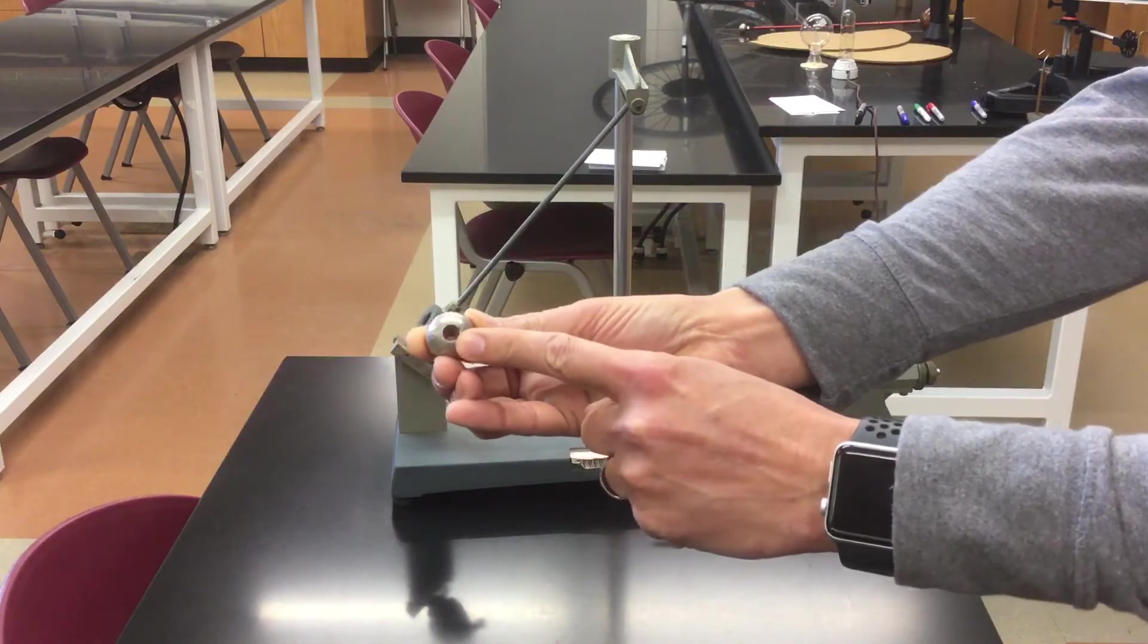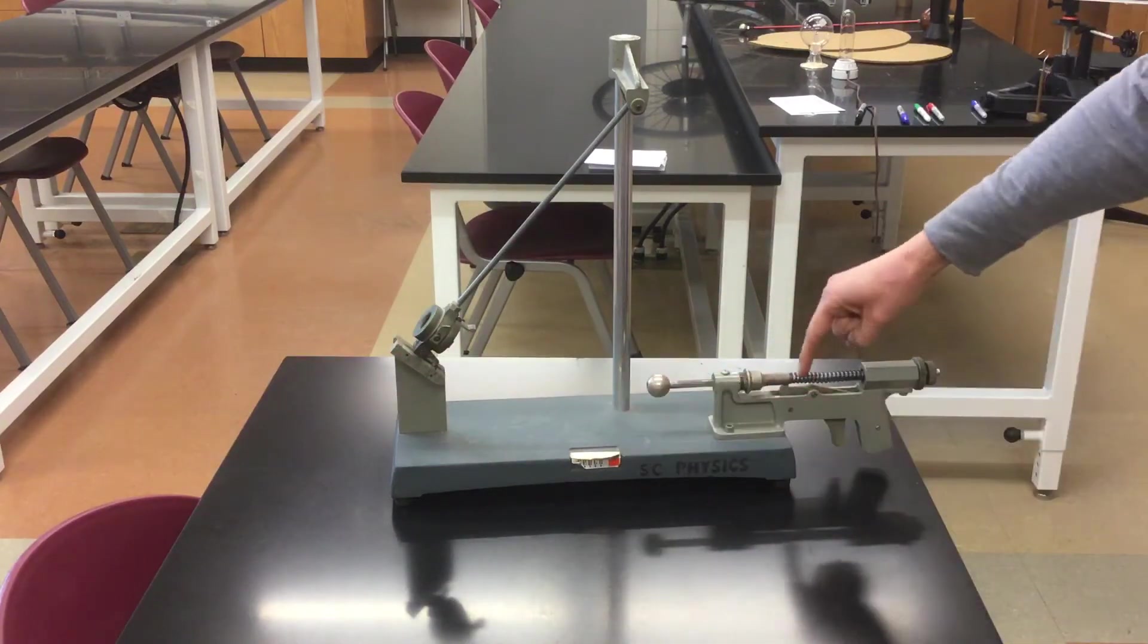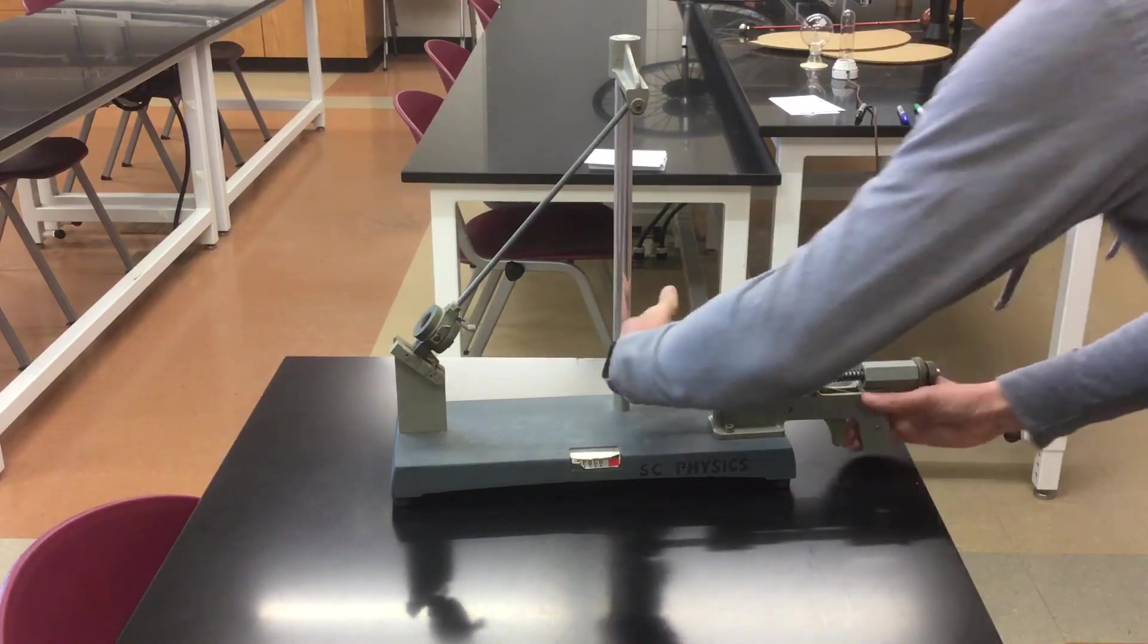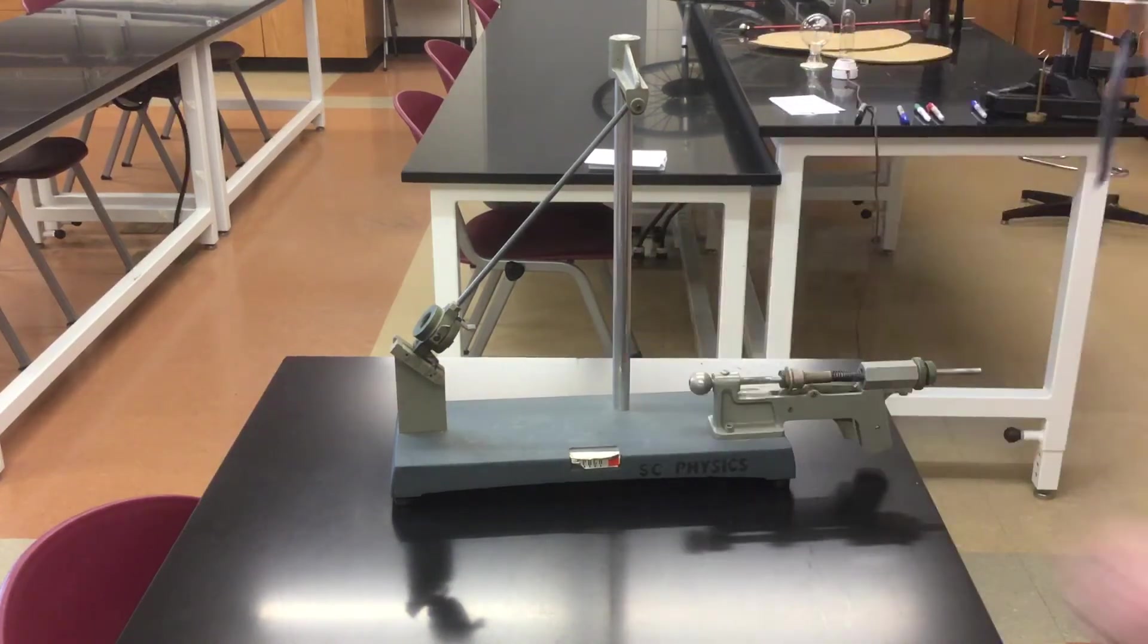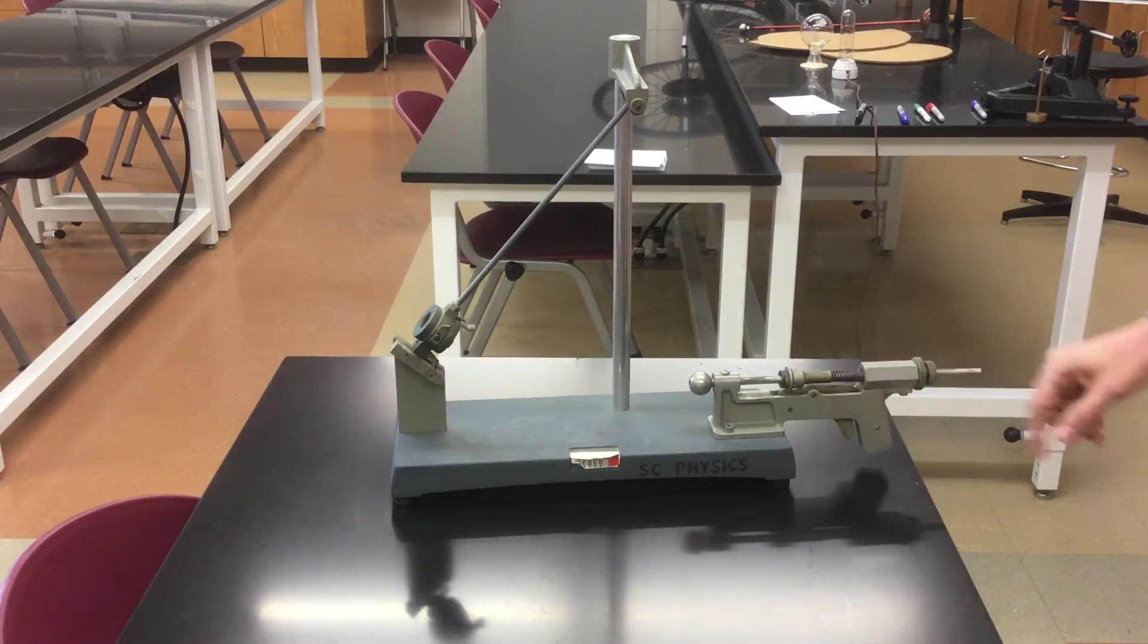There's a hole in this marble that allows it to fit on here. And then this is a pretty stiff spring. It's got a large K value so I got to put some effort into it and now there's a decent amount of elastic potential energy stored.